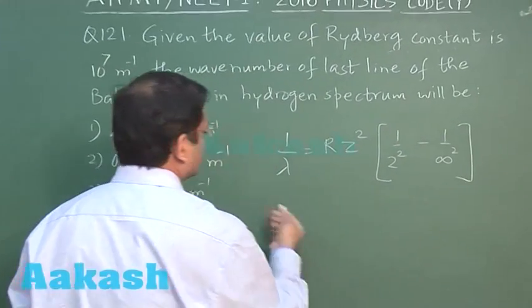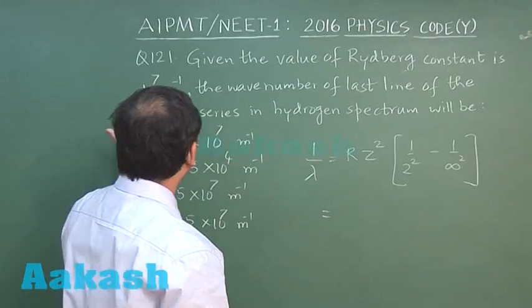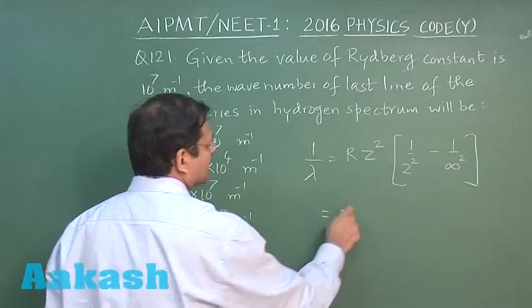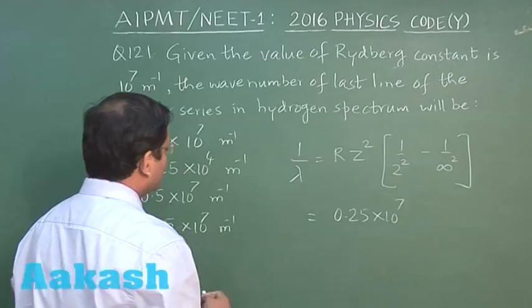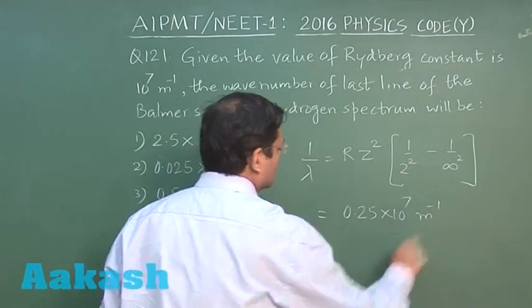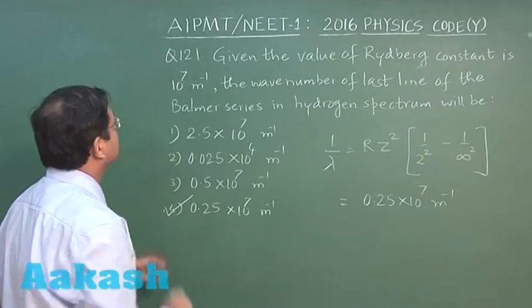So you have to calculate this value. This is simply one fourth of the Rydberg's value, that is 0.25 into 10 to the power 7 per meter. So the option which you are supposed to mark is fourth one for this question.